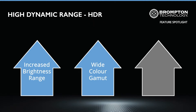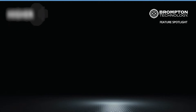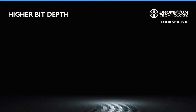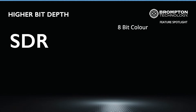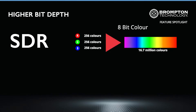The third improvement is the use of a higher bit depth. This allows us to describe the increased brightness range and wider colour gamut of HDR content. Almost all SDR content that consumers see uses 8-bit colour, also known as true colour. This is where each of the three primary RGB colours of a pixel are defined by an 8-bit number, which is capable of describing 256 levels of brightness for each primary channel. Together, this allows for just over 16.7 million different colours.